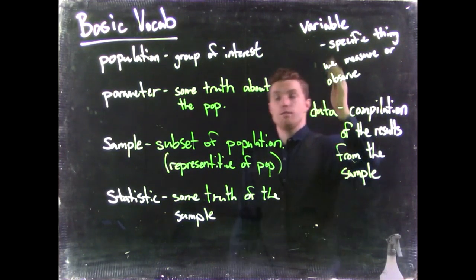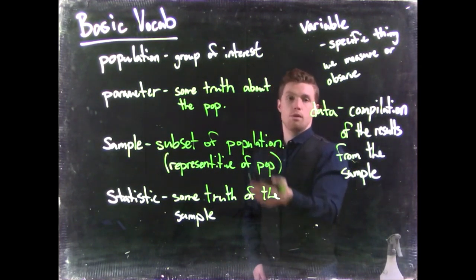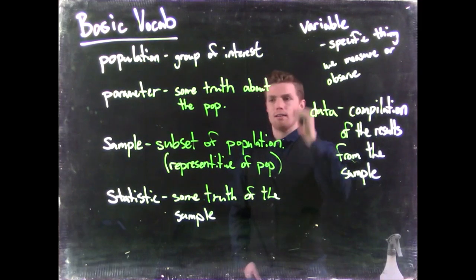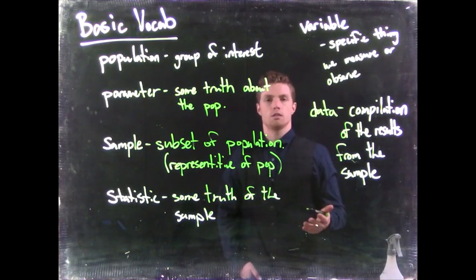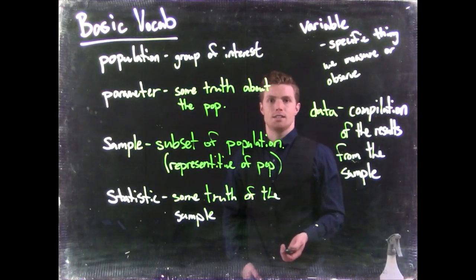Compilation of the results from the sample. So we have some variable, we get the answer for every single person in our sample, and then we put it together, usually in tabular format, and that becomes our data. So this is just a quick intro into what is our basic vocab in statistics.